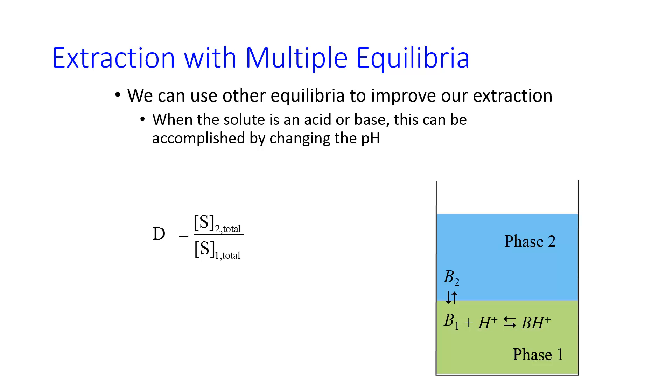So in phase 1, this would be B1. It would also be the protonated form. We call this thing, instead of the partition coefficient, the distribution coefficient. And this is the mathematical expression of that.